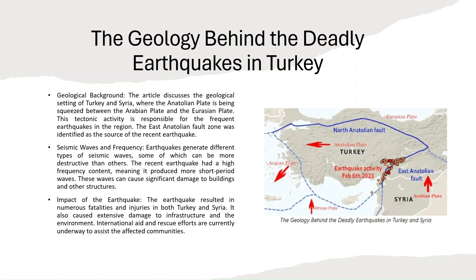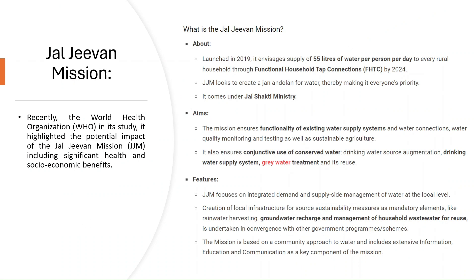Next, we dive into the Jal Jeevan Mission, which according to the WHO is a groundbreaking effort with not only environmental implications but also significant health and socio-economic benefits. The mission envisions delivering 55 liters of water per person per day to every rural household by 2024, achieved through the implementation of Functional Household Tap Connections, or FHTCs. The mission falls under the purview of the Jal Shakti Ministry and aims to create a Jan Andolan — a people's movement for water — making it a collective priority.